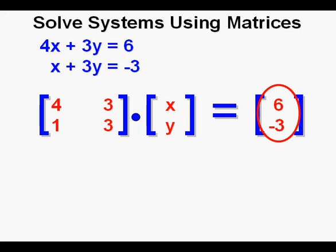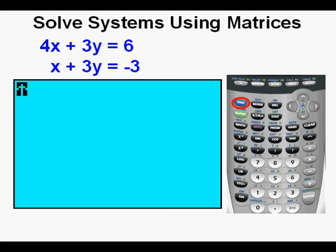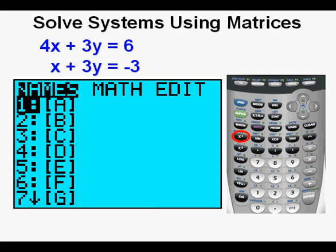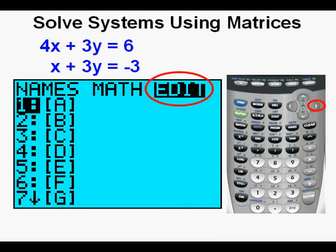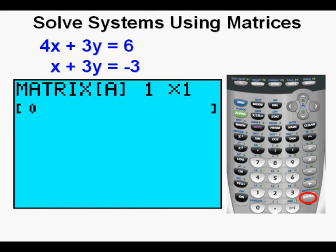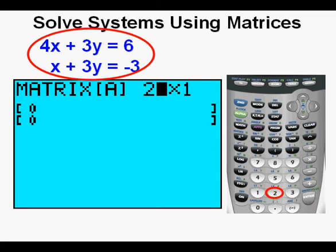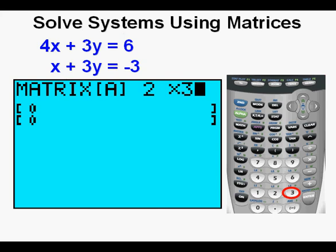Instead of writing the matrices by hand, we enter the equations directly into the calculator. Access the matrix menu by pressing 2nd, then the x-to-the-negative-1 key which has 'matrix' above it. Arrow twice right to the Edit submenu and press enter. We are now in the matrix setup screen. Since the system has two rows and three columns, we set up a 2 by 3 matrix by pressing 2, enter, then 3, enter.